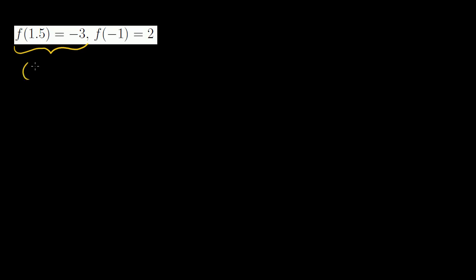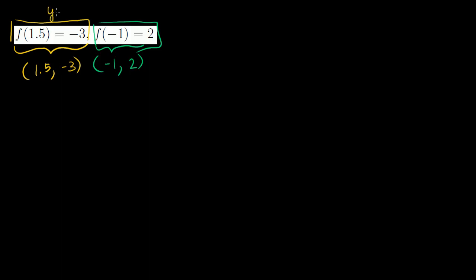They tell us f(1.5) = -3 and f(-1) = 2. This is a fancy way of saying that the point (1.5, -3) is on the line and the point (-1, 2) is on the line. The point of this problem is to get you familiar with function notation — if y = f(x), then the y-coordinate equals -3 when x is 1.5.